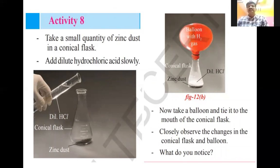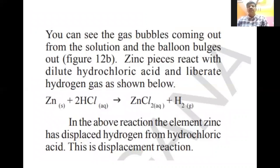From our textbook there is an activity: take a small quantity of zinc metal dust in a conical flask and add dilute hydrochloric acid slowly. Zinc plus HCl gives rise to ZnCl₂ plus H₂. The Cl is replaced with zinc, so the remaining hydrogen forms hydrogen gas. That hydrogen gas fills the balloon — the red color balloon we observe in the picture. Take a balloon and tie it to the mouth of the conical flask and closely observe. The balloon will increase in size due to the evolution of hydrogen gas from the chemical reaction. You can see gas bubbles coming out from the solution and the balloon bulging out.